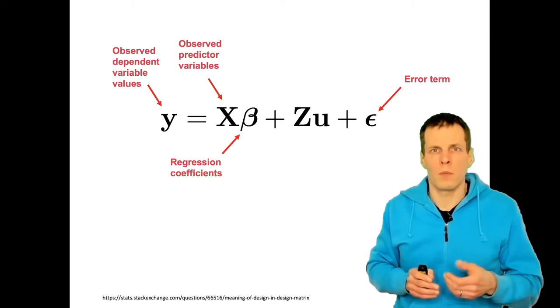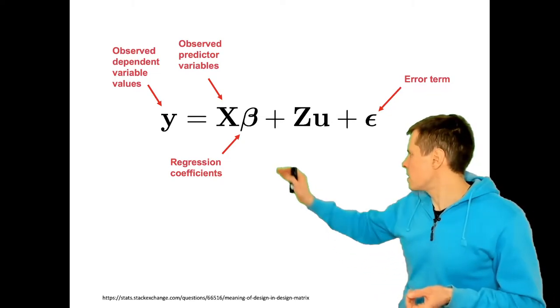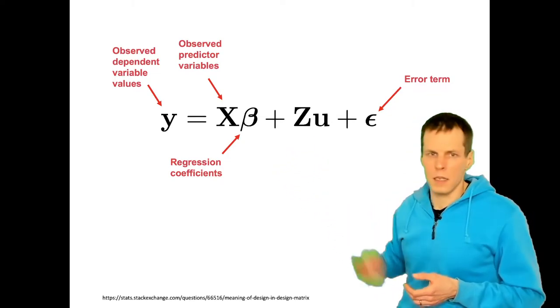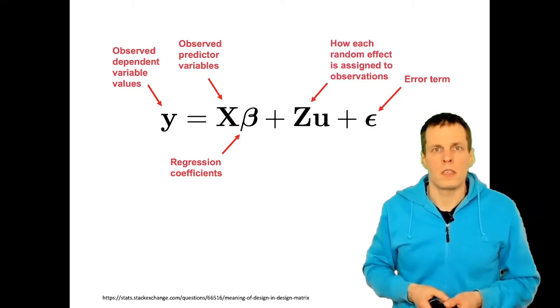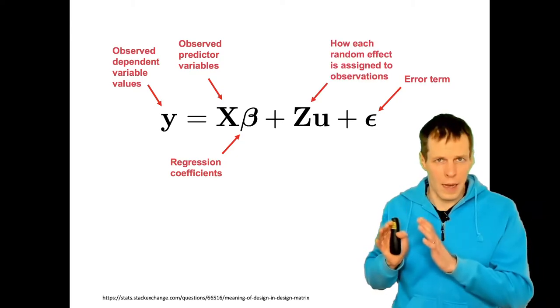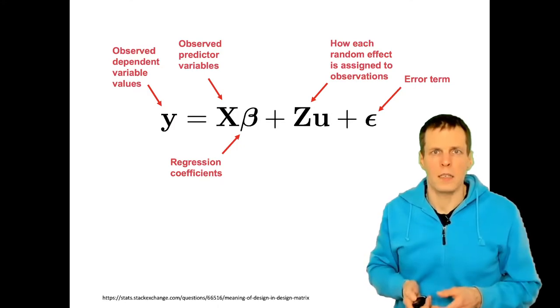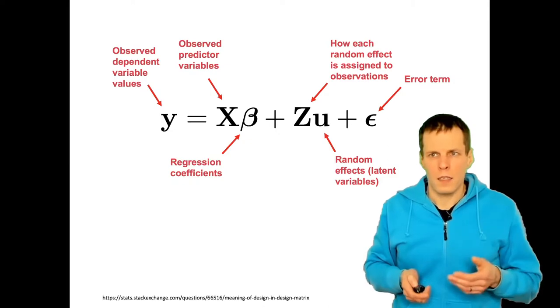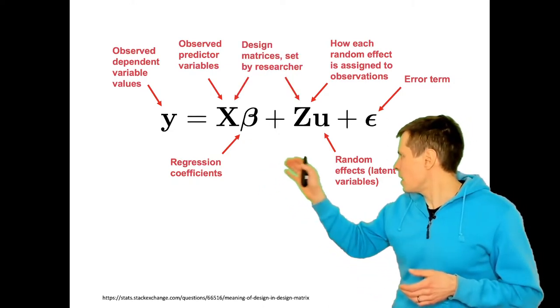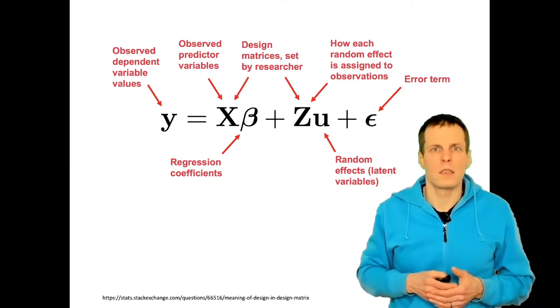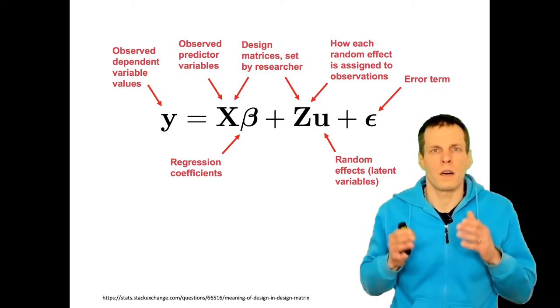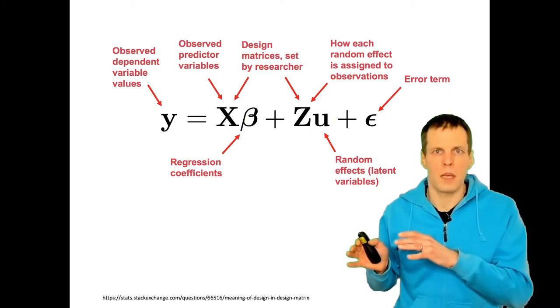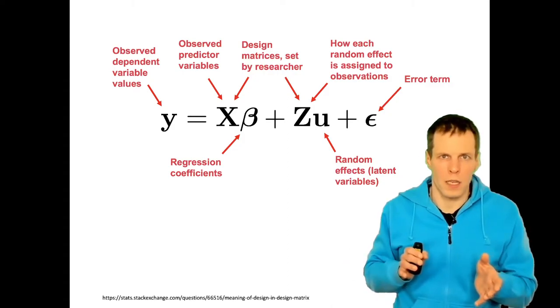The multilevel model or mixed model adds this mixed effect or random effects here. We have Z, which is a matrix that allocates the random effects to the cases, and then we have the random effects vector u. These X and Z are called design matrices because they specify how those effects that are estimated are allocated onto the cases.